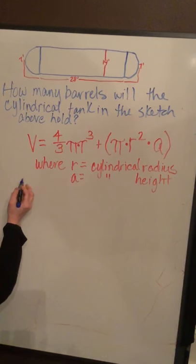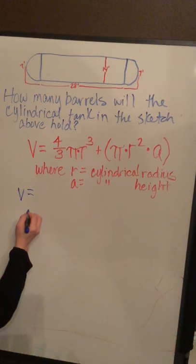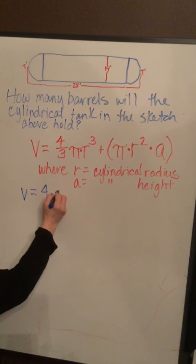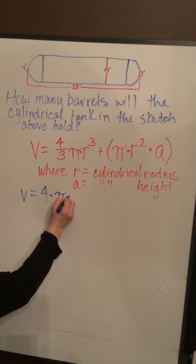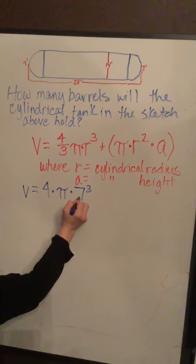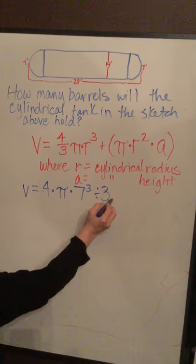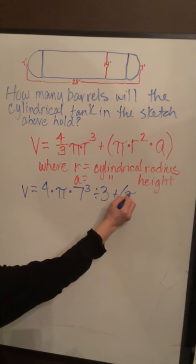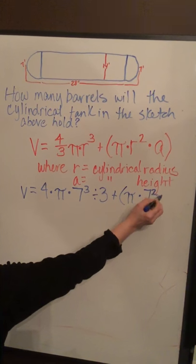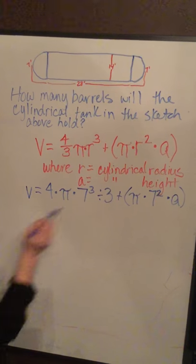Okay so let's plug in our numbers. We have volume equals 4 times pi times 7 cubed divided by 3 plus pi times 7 squared times a which is your height.